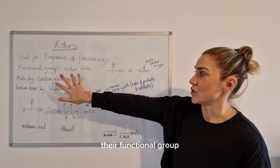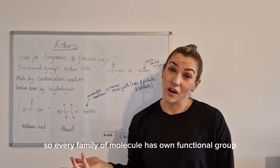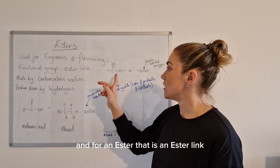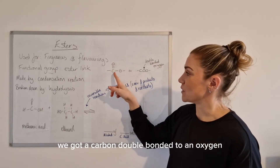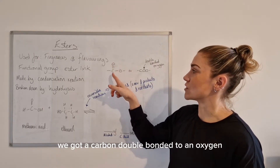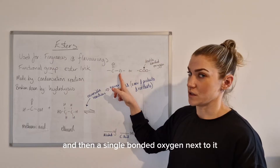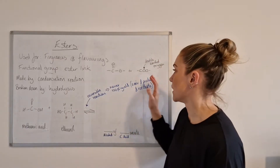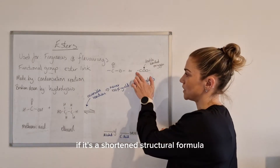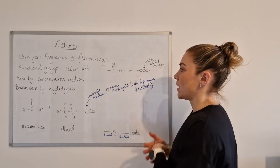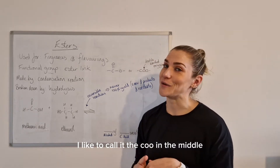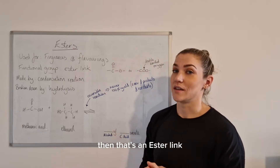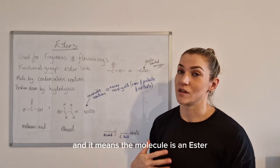Every family of molecule has its own functional group, and for an ester that is an ester link. That is an arrangement where you've got a carbon double bonded to an oxygen and then a single bonded oxygen next to it, in the middle of a chain of carbons. In a shortened structural formula you'll see it written as COO — I like to call it the Q in the middle — and if you ever see a Q in the middle of a molecule then that's an ester link and it means the molecule is an ester.